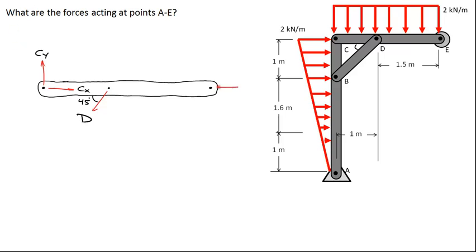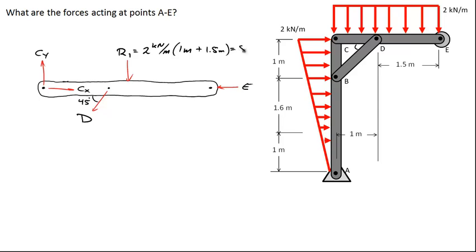We'll call this force D. At point E, because a roller can only exert a normal force, that force acts only to the left in the negative x-direction. There's also a downward resultant force R1 from the uniform distributed load of two kilonewtons per meter, acting at the midpoint of CDE. R1 equals two kilonewtons per meter times the length of CDE, which is 1.0 plus 1.5 meters, giving R1 equal to five kilonewtons, acting 1.25 meters from C.